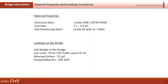For loadings on the bridge, we are considering self-weight and live load. For live load, we will consider three 12-foot traffic lanes of HL-93, similar to the FHWA example. The wearing surface is around 25 PSF, and parapets and barriers are about 495 pounds per foot.